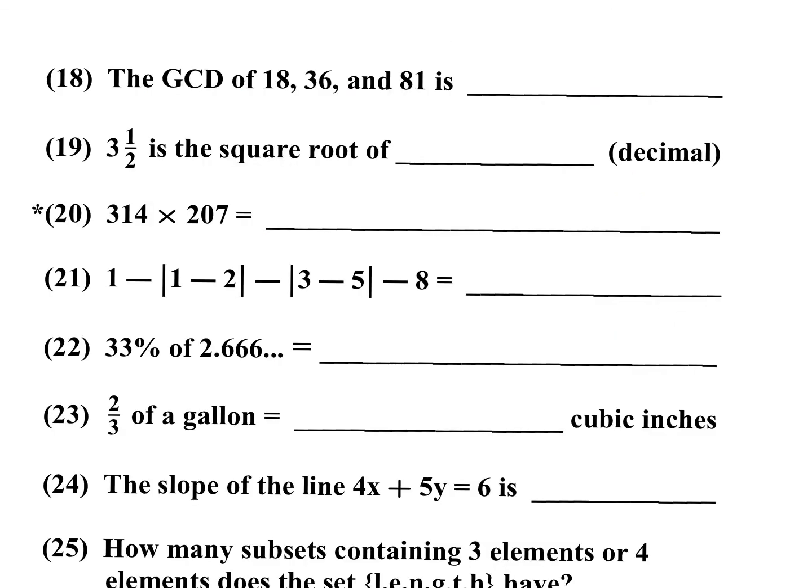Number 18. The greatest common divisor for 18, 36, and 81. So 18 goes into 36, but it doesn't go into 81. 81 is 9 times 9. They all have a common factor of 9. So your answer here would be 9.